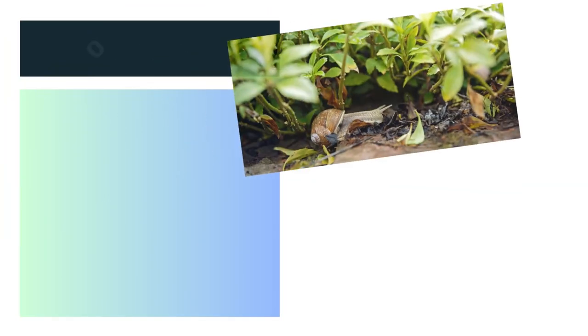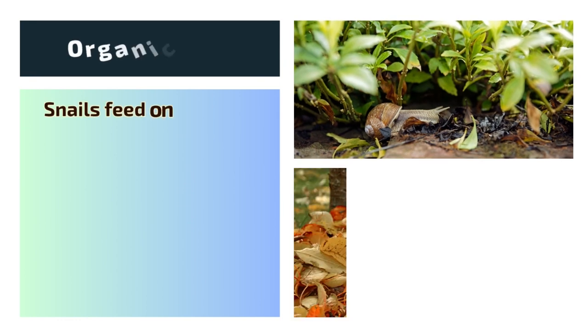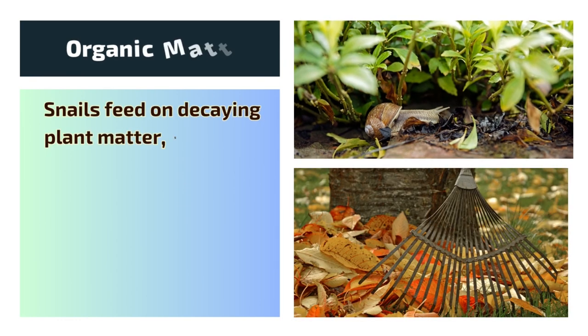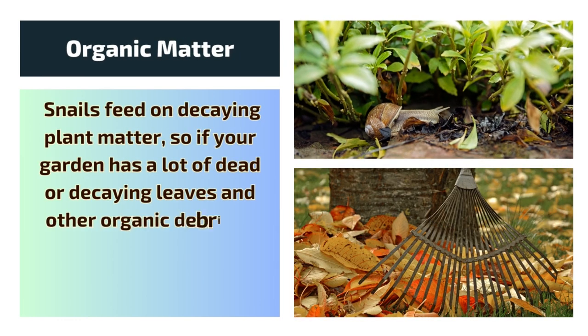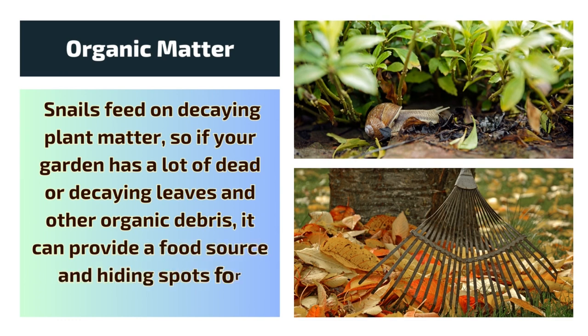3. Organic Matter. Snails feed on decaying plant matter, so if your garden has a lot of dead or decaying leaves and other organic debris, it can provide a food source and hiding spots for snails.